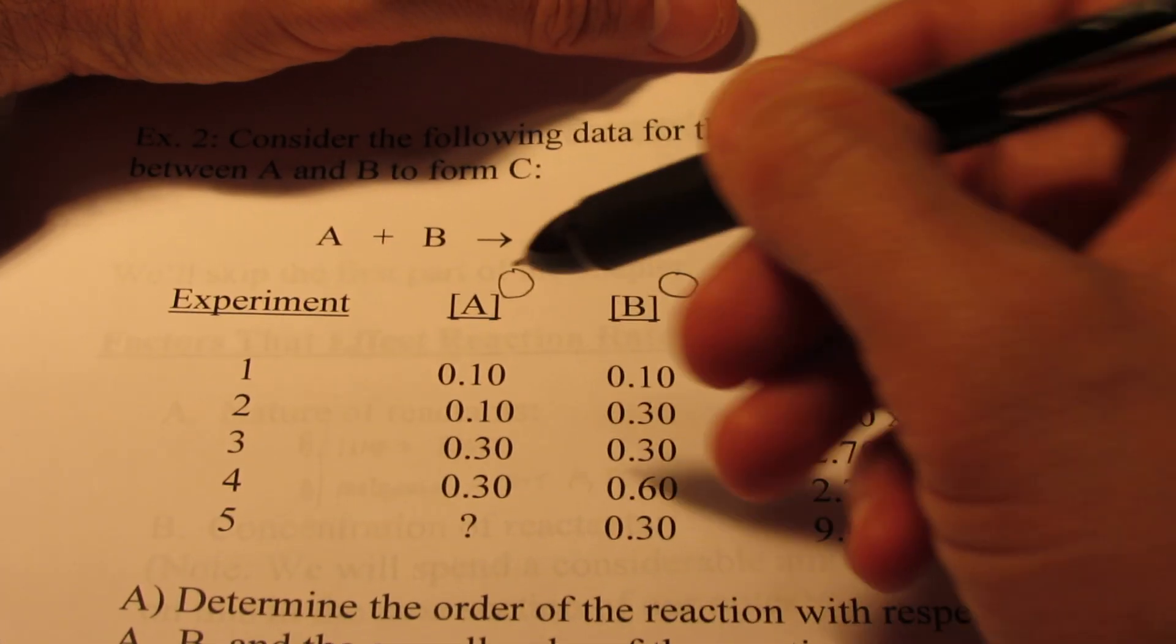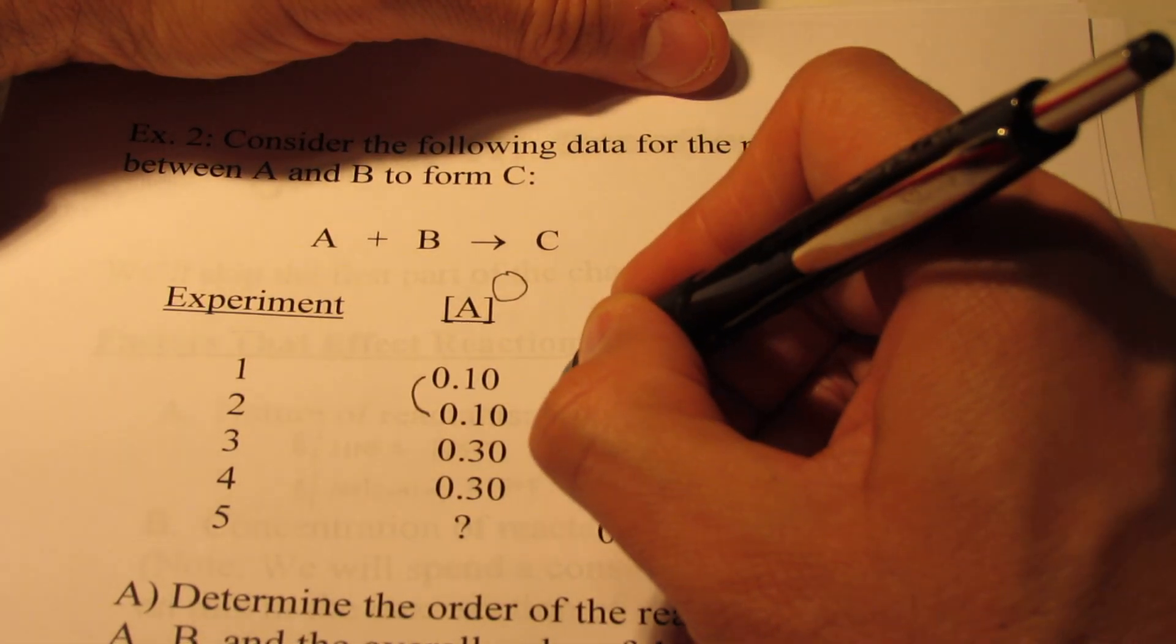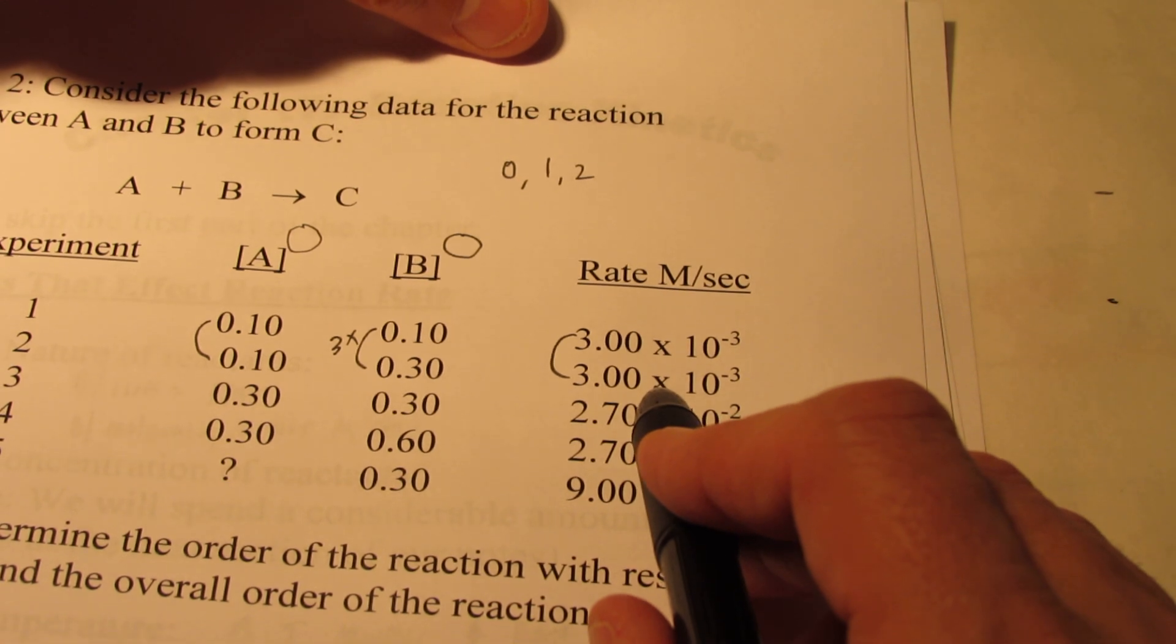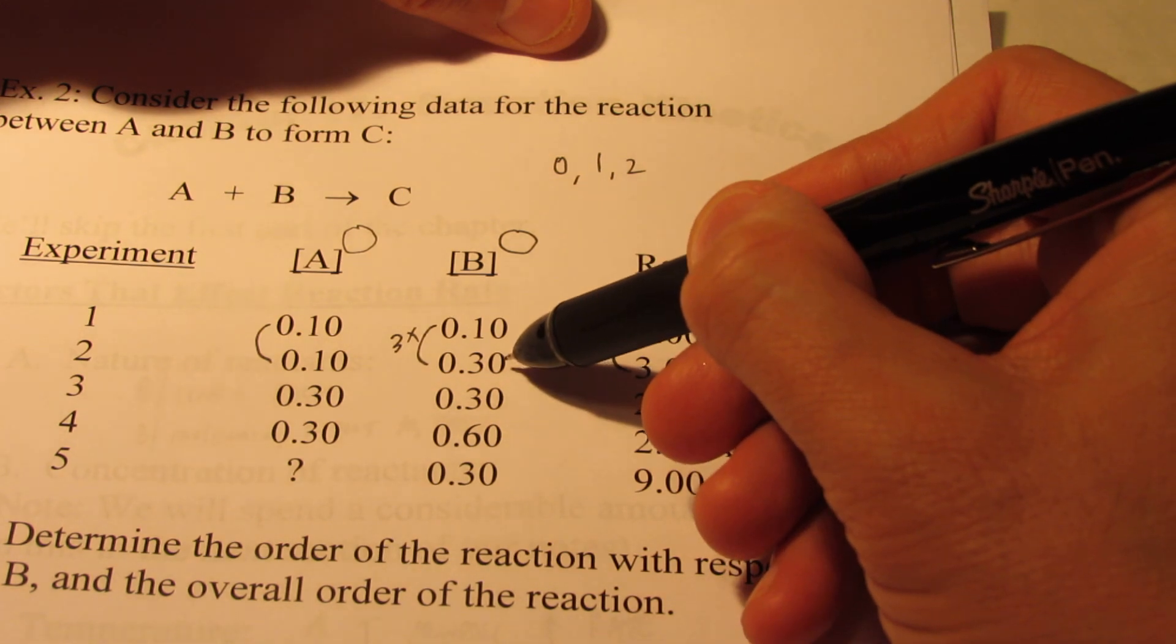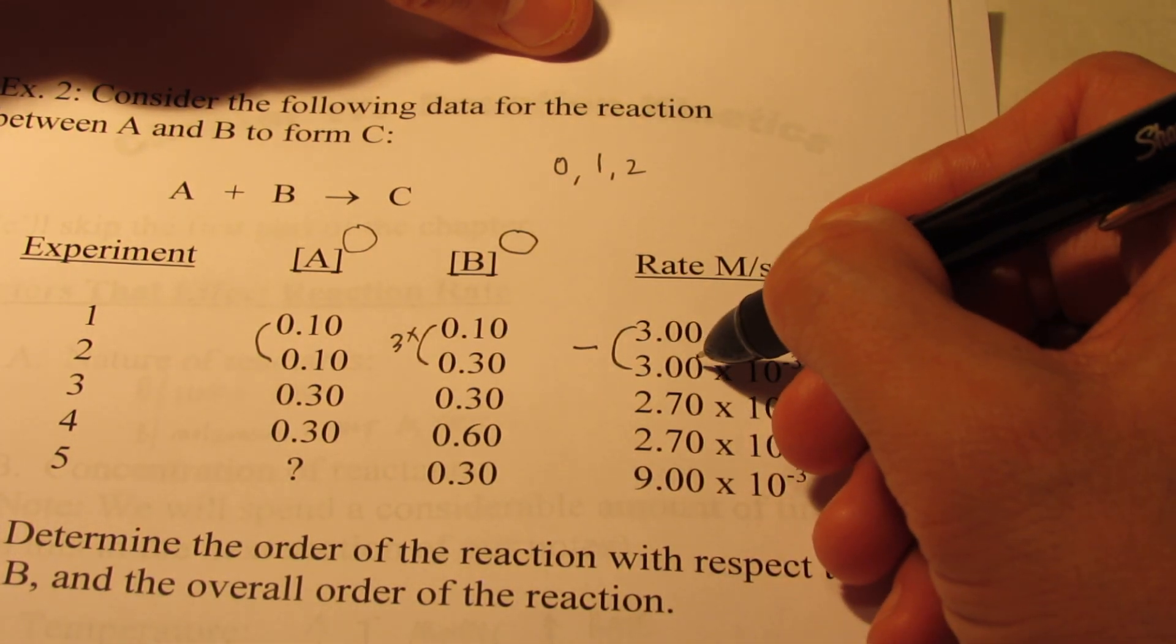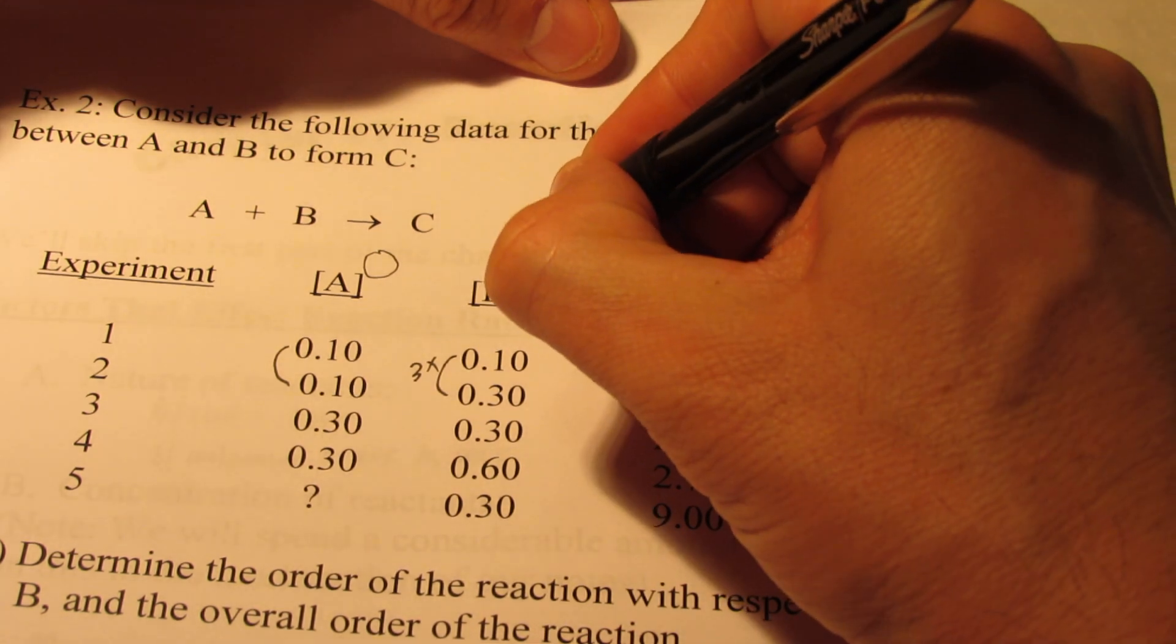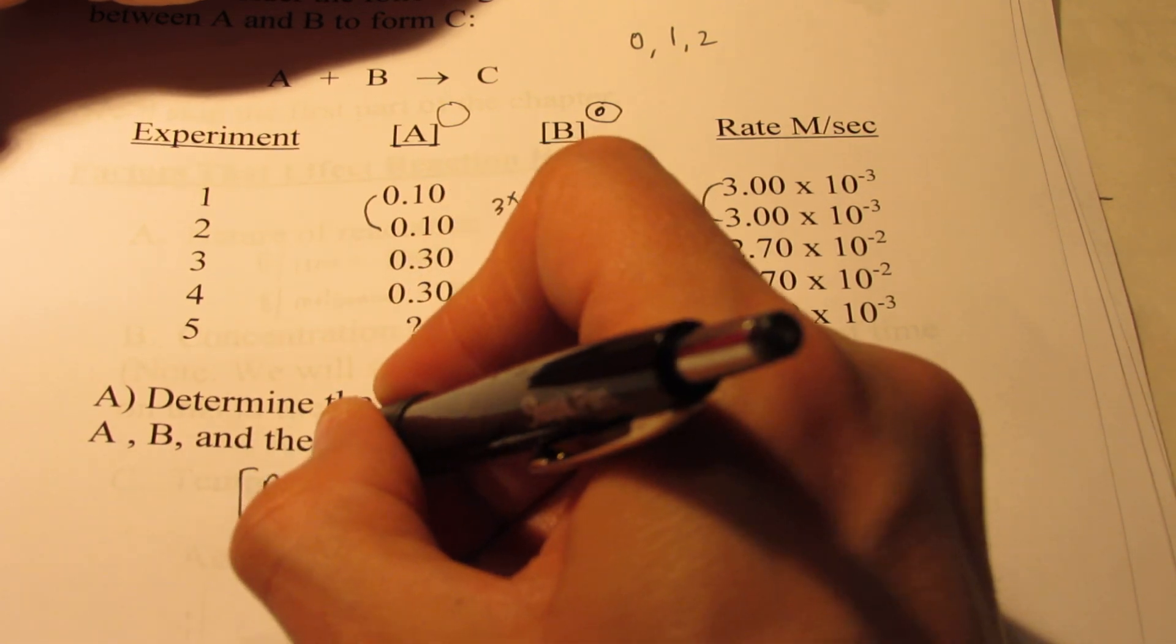So let's take a look at the first two experiments. A does not change, but B triples, doesn't it? What does my rate do? It goes from 3 times 10 to the negative third to 3 times 10 to the negative third. It doesn't do a darn thing. So tripling B while A stayed constant had nothing to do with the rate. Nothing happened here. So what is the order with respect to B? Is it zero, one, or two? If you said zero order, you are correct. So B would be zero order.